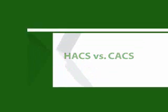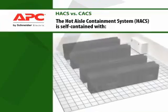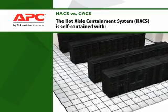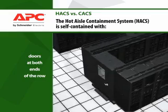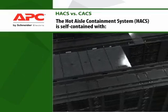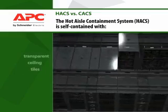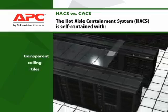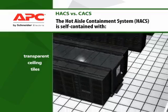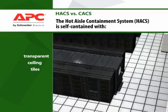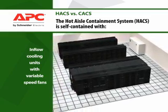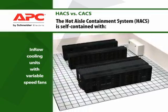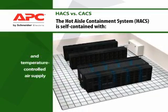APC's Hot Aisle Containment System, or HACS, consists of doors that cap both ends of the row, transparent ceiling tiles, and APC's own in-row cooling units with variable speed fans, and a temperature controlled air supply to the cold aisle.